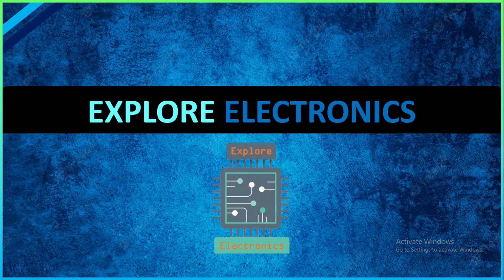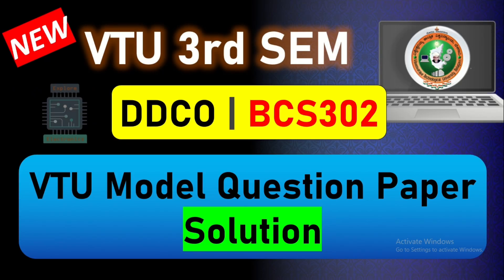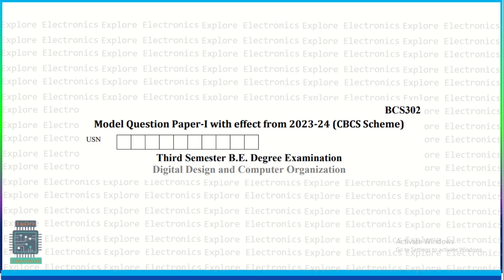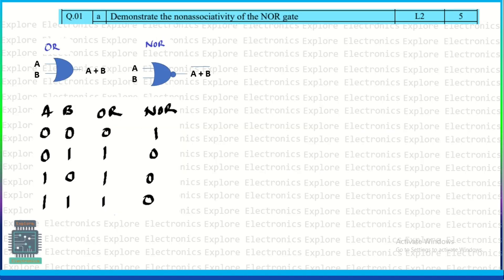Hey guys, welcome back to Explore Electronics. Let us see the complete solution for the model question paper of DDCO subject. The question paper was released by VTU recently — this model paper is effective from the 2023-24 CBCS scheme, code BCS302. The first question asks to demonstrate the non-associativity of the NOR gate. Here you can see the OR gate and NOR gate symbols as well as the truth table.